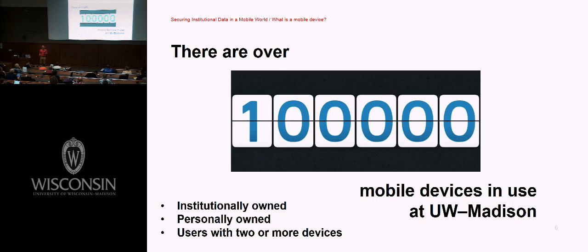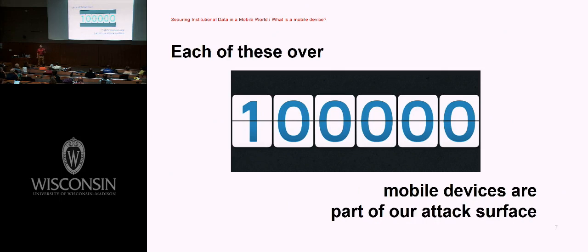Just recently was the 10th anniversary of the launch of the iPhone, which, aside from Palm devices and some others, was really the first fully functional smartphone. And then with Android, we're in a world now where you are carrying around a full-fledged computer in your pocket. It's an endpoint. We've got institutionally owned devices, personally owned devices, people with multiple devices — and each of these devices is part of our attack surface, together a greater part of our attack surface.